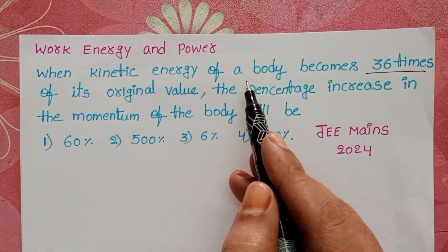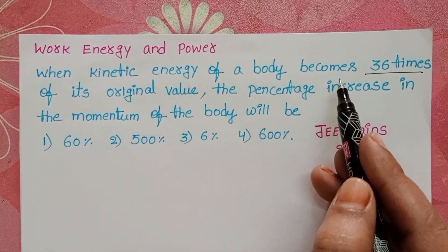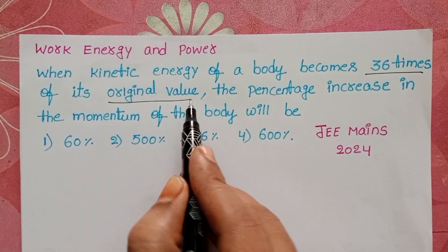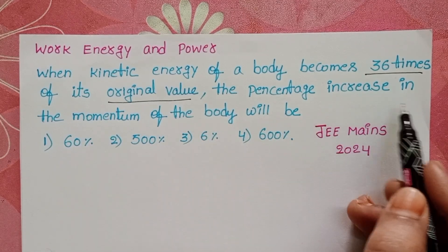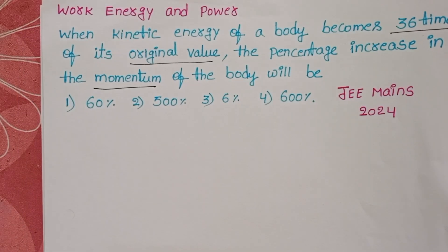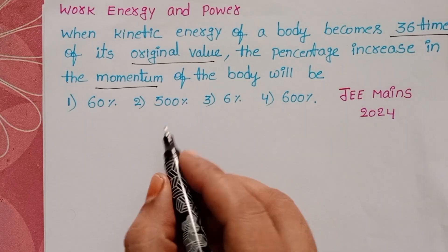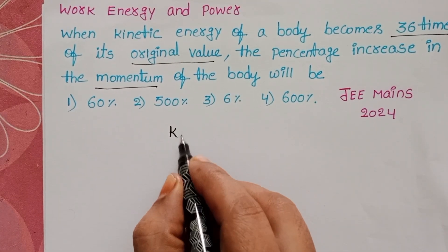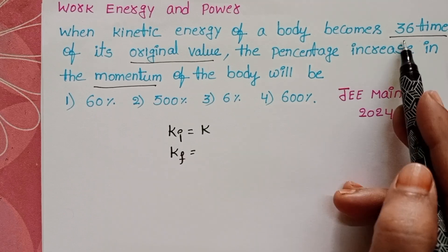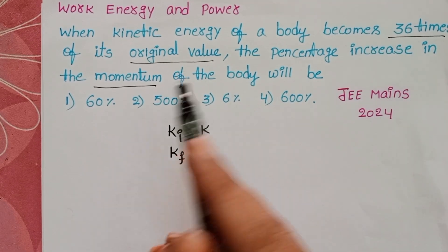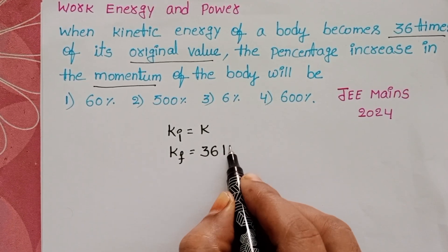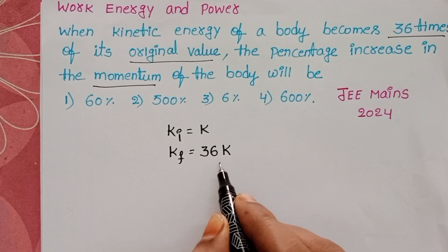When the kinetic energy of a body becomes 36 times its original value, find the percentage increase in the momentum of the body. Let us take the initial kinetic energy as K, and the final kinetic energy is 36 times its original value, so the final kinetic energy equals 36K.